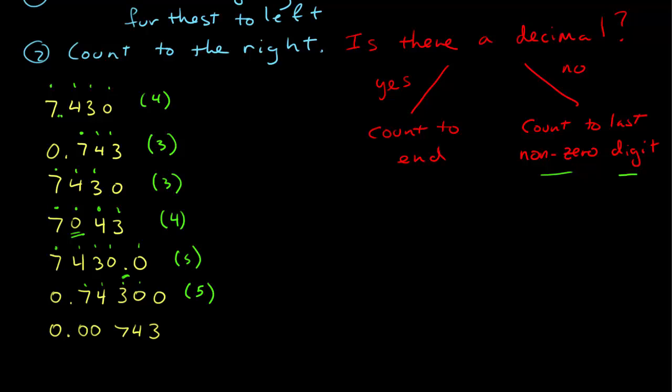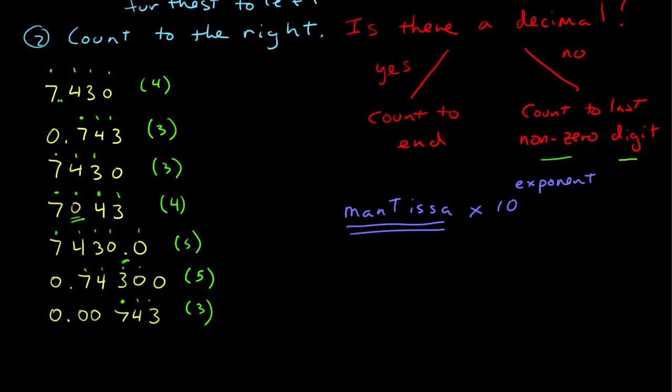And now, the furthest to the left is this 7, and I count to the end, which is 3. In scientific notation, you have a number and then an exponent. The number is called the mantissa times 10 to some exponent. And in scientific notation, the number of significant figures is always the number of digits in the mantissa.